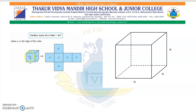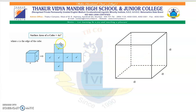You can observe this blue cube. In this, each side is given as A. So when we find the surface area of this cube, it will be equal to 6A².